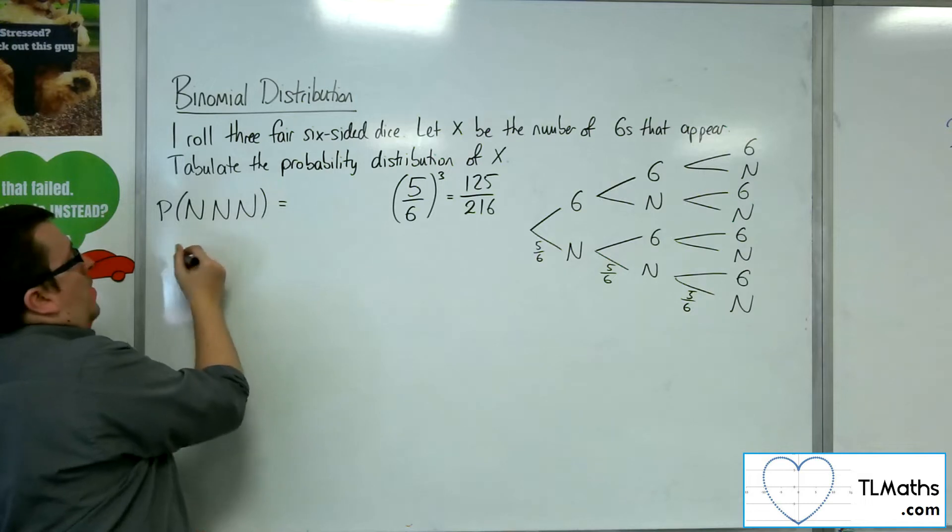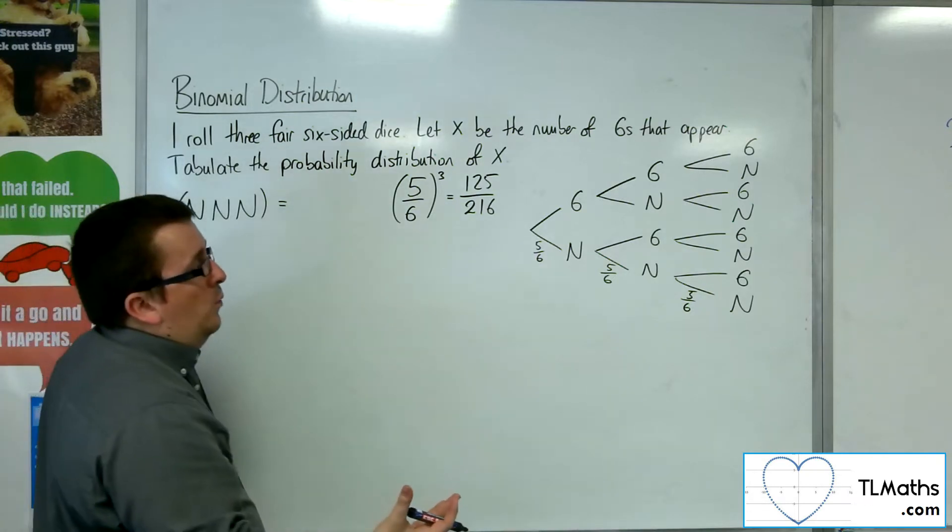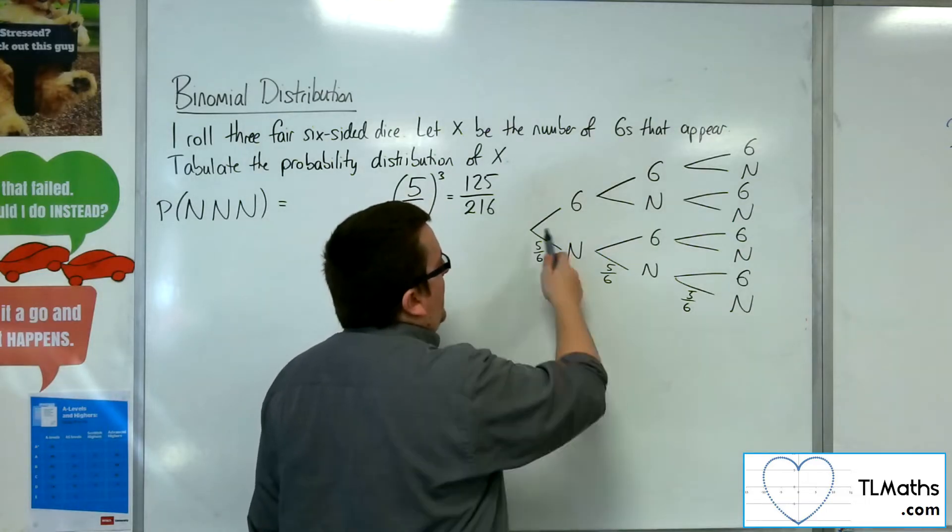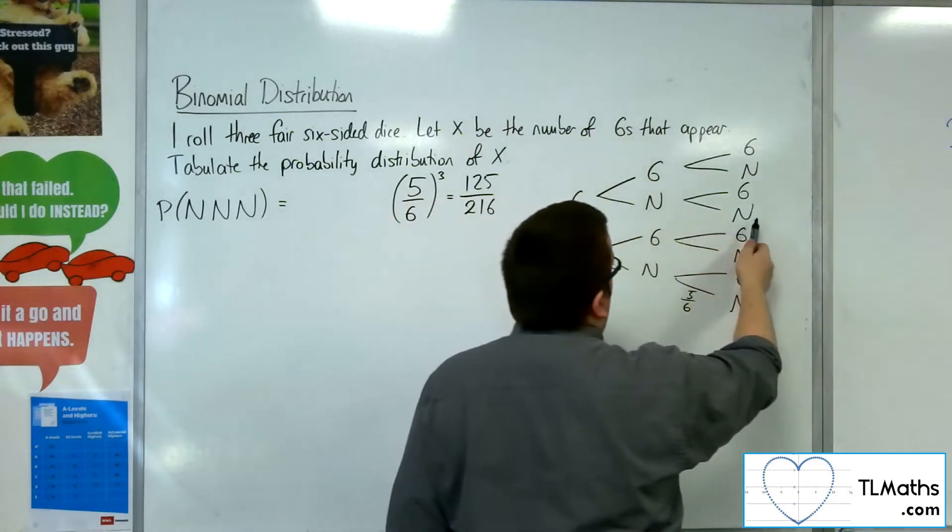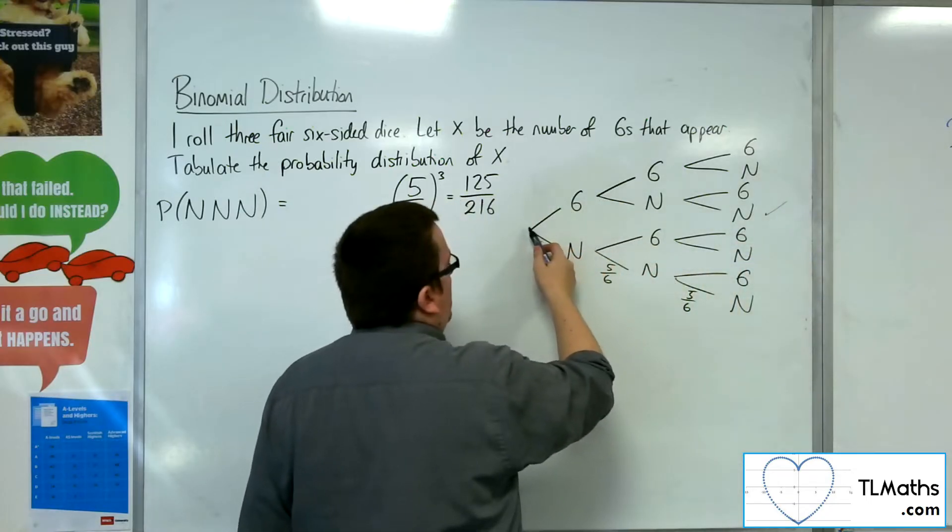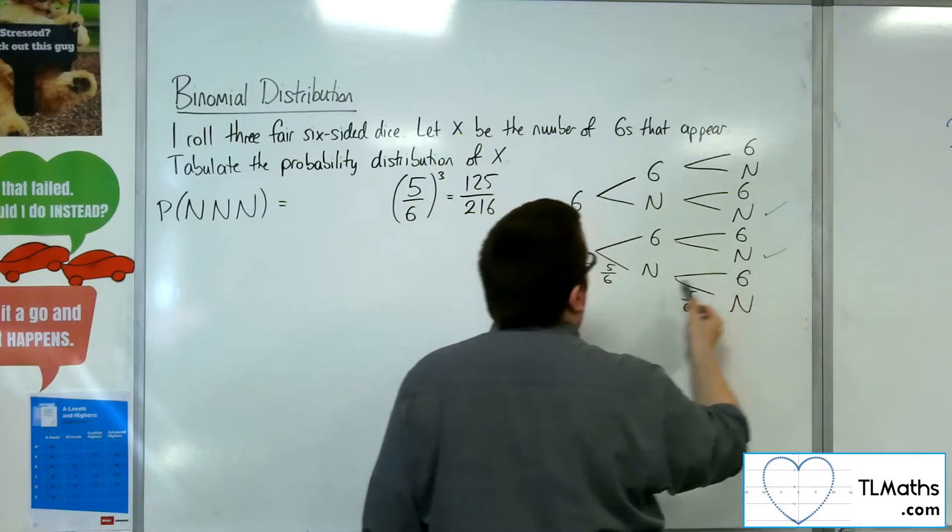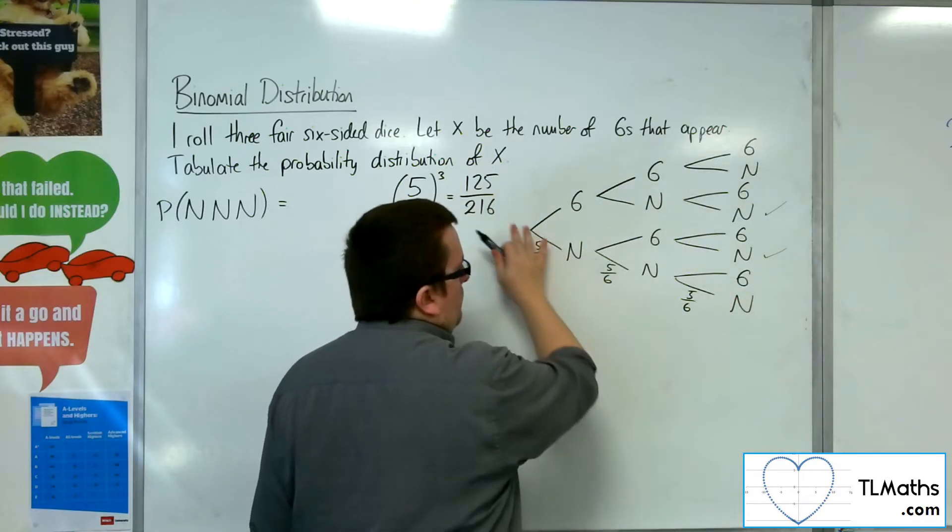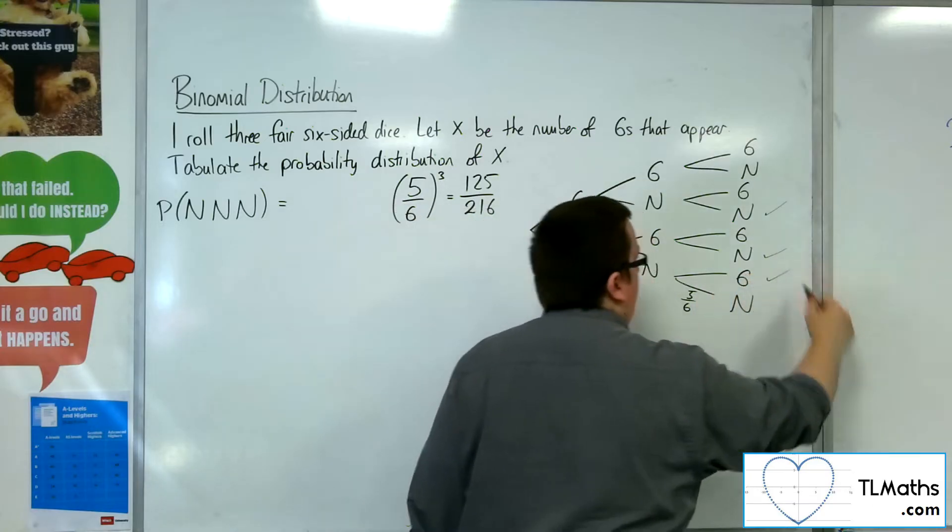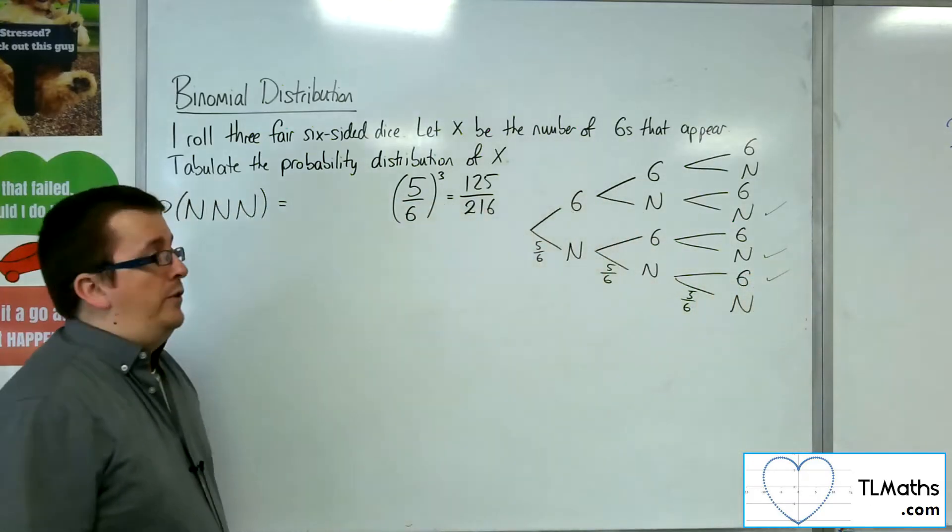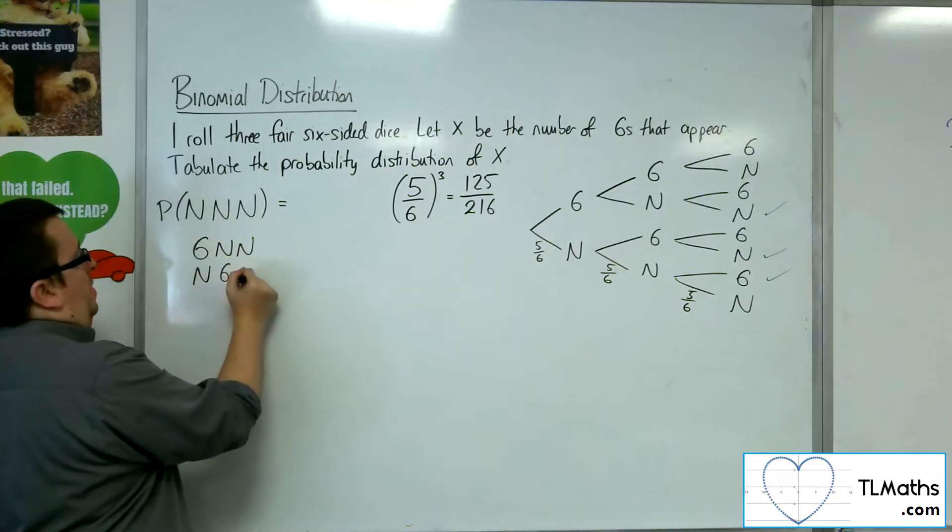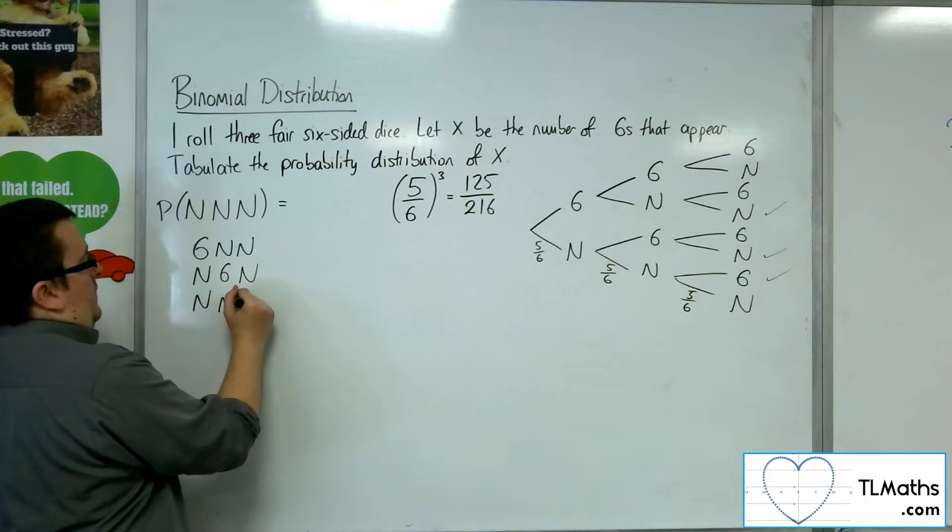Well, if we think about how many ways that can happen, either I get one six and then two no sixes, or I don't get a six, then a six, then not a six, or I get two numbers that aren't sixes and then a final one that is a six. So you can see there are three routes through. So either six n, n, n, six, n, or n, n, six.